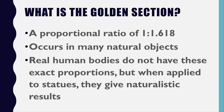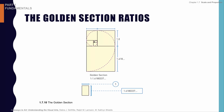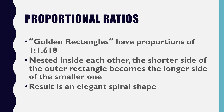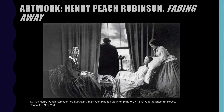Next we're going to look at the golden section. It occurs in many natural objects, and it's a mathematical ratio that is really unique. It actually creates a spiral. Let's look at an example of how it's used.